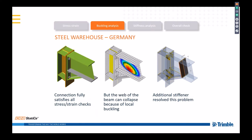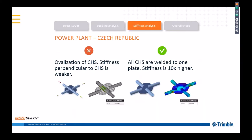Sometimes the joint is okay from the point of stress and strain, but there might be buckling — like in this steel warehouse joint example. We can simply add a stiffener, either in Tekla or in IDEA Statica, run the check again and see that we fixed the problem. Sometimes we can optimize: if you understand the joint, we can cut the second tube as well and get stiffness 10 times higher for the same money.